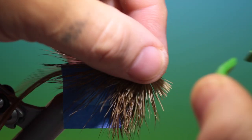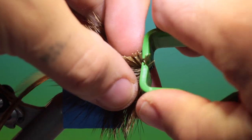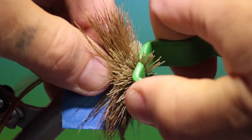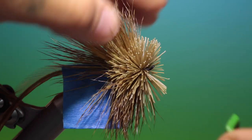And we take our hair packer. You don't want to pack this super tight otherwise it will lose its effect when you fish it. You want it to muddle.